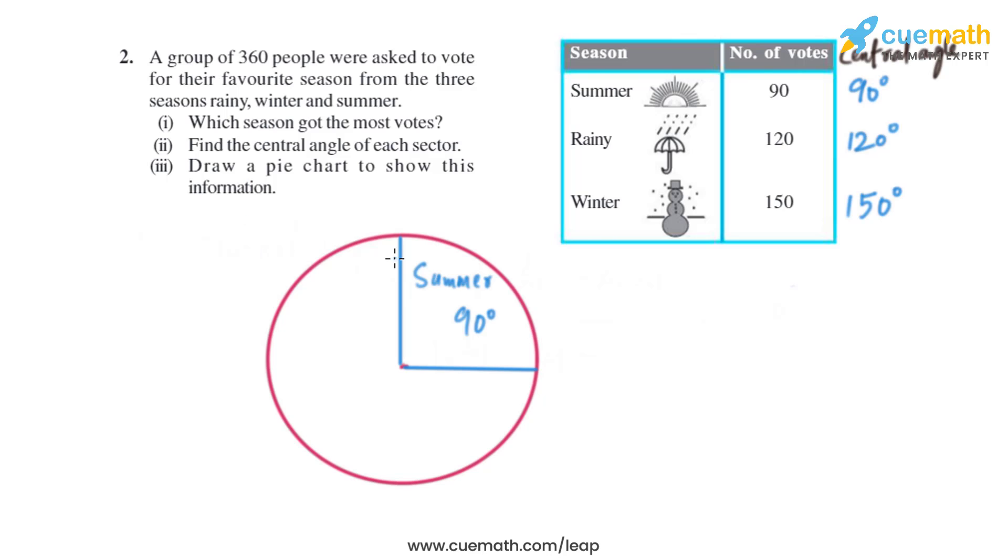Now we will draw for rainy season, which is 120 degrees. If we draw 120 degrees with this center, if we put our protractor like this and then draw 120 degrees, it will be somewhere like this. This is how we will draw for rainy season, which is 120 degrees.